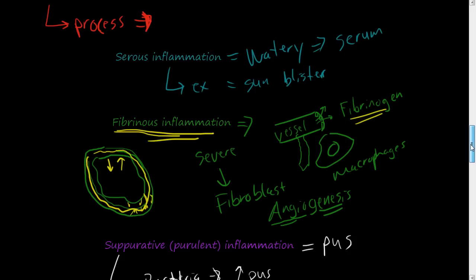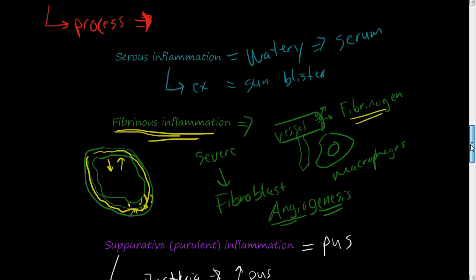So those are the three types of inflammation, the morphological patterns of acute inflammation. You get serous inflammation, fibrinous inflammation, suppurative or purulent inflammation, which is just a pus forming type of inflammation. We'll see you in the next video.